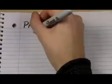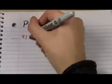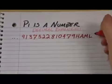Pi is a number, and that's why I can completely guarantee no part will be 9-1-3-7-5-2-2-8-10-4-7-9-H-A-M-L-E-T.